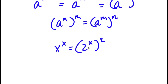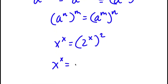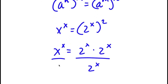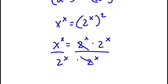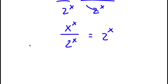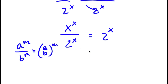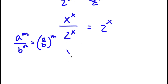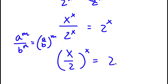Now 2 to the power of x squared, I'm going to rewrite this as 2 to the power of x times 2 to the power of x. So now on both sides I'm going to divide by 2 to the power of x — these two cancel out — and now I'm left with x to the power of x over 2 to the power of x is equal to 2 to the power of x. If I have something in the form a to the power of m over b to the power of m, this is equal to a over b to the power of m. So this equals x over 2 to the power of x, which is equal to 2 to the power of x.